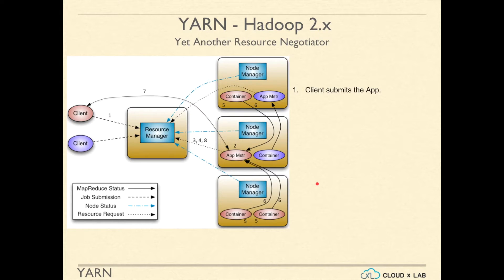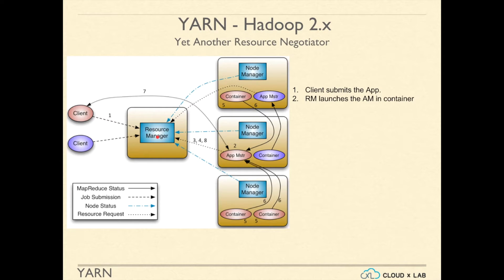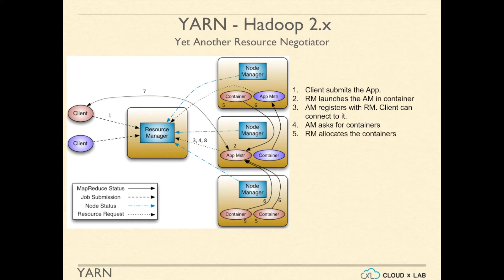The flow of workload execution goes like this. A client submits the application to the resource manager. The resource manager consults with the node managers and creates an application master for the client inside a container. The application master registers itself with the resource manager so that the client can monitor the progress and interact with the application master. The application master then requests the resource manager for containers, and the resource manager consults and negotiates with node managers for containers.